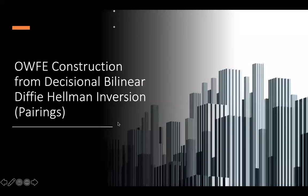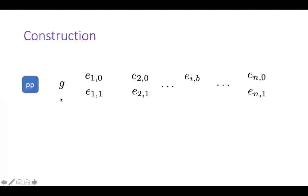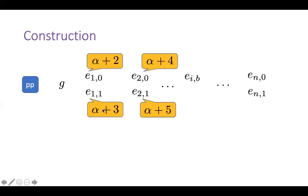Now let's move on to the one-way function with encryption construction based on pairing assumptions. The idea is pretty similar to the factoring-based construction. The public parameters consist of a group generator g and a matrix of E_{i,b} values, where n is the input length. Unlike the factoring construction where E_{i,b} values are random primes, here these values are correlated: we sample a random α and set E_{i,b} = α + 2j + b (consecutive values), so E_{1,0} = α+2, E_{1,1} = α+3, and so on, giving E_{i,b} = α + 2i + b.